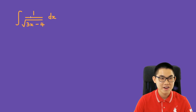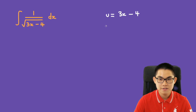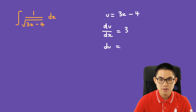The integral of 1 over the square root of 3x minus 4, dx. Same as last time, let u equal 3x minus 4, so du/dx is 3, then du is equal to 3 dx.